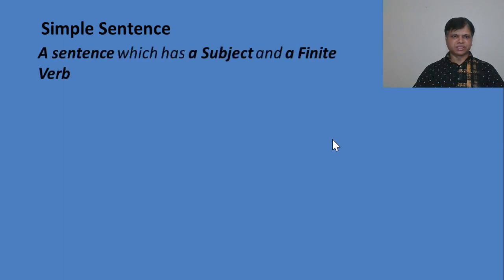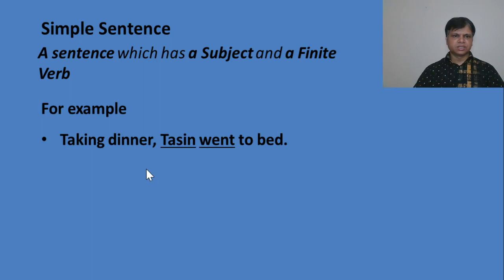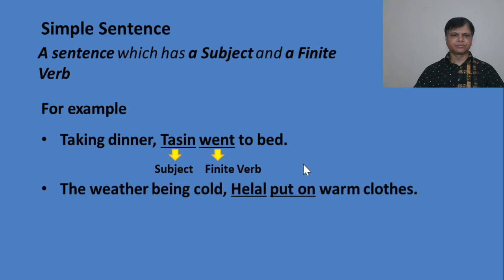A simple sentence has a subject and a finite verb. That is, a sentence which has only one subject and a finite verb is called a simple sentence. For example: 'Taking dinner, Tassin went to bed.' Here 'Tassin' is the subject and 'went' is the finite verb. 'The weather being cold, Halal put on warm clothes.' Here 'Halal' is the subject and 'put on' is the finite verb.